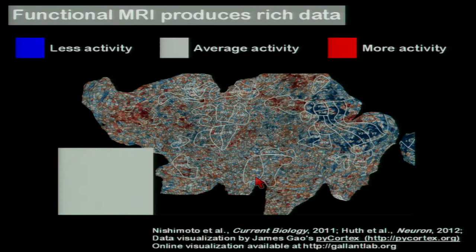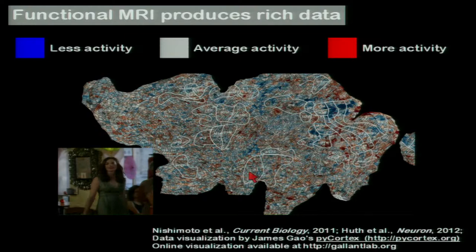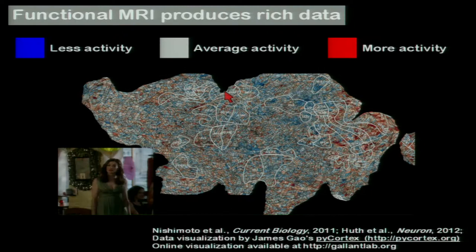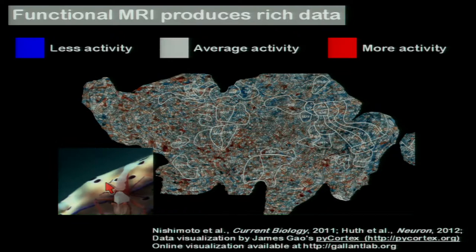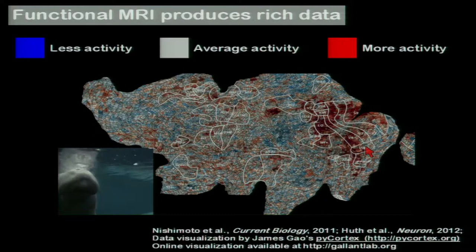They've now been warped because the brain has been unfolded. We can overlay in white the ROIs that we know about. Here's the auditory ROIs, the visual system in the back on the right, and the motor and somatosensory strip. You can see as people are passively watching this movie — they're fixating on a small spot — the brain activity is changing quite dramatically all over the brain.